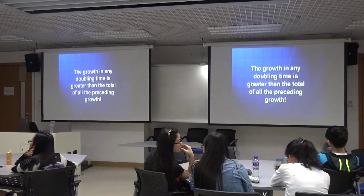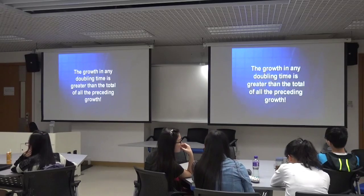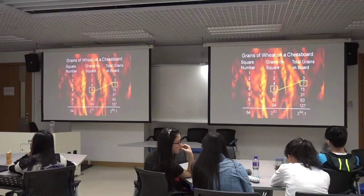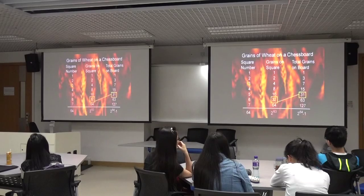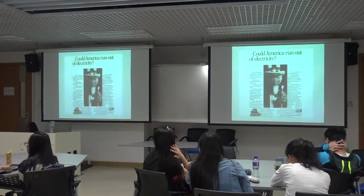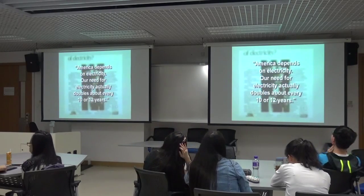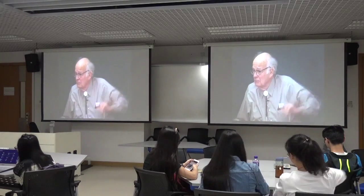Every time a growing quantity doubles, it takes more than all previous growth combined. Now let's translate that into the energy crisis. An ad from 1975 asked 'Could America run out of electricity?' America's need for electricity doubled every 10 to 12 years — an accurate reflection of very long history of steady growth in the electric industry, at about seven percent per year. With all that history, they expected growth to continue forever. Fortunately it stopped, but not because anyone understood the arithmetic.